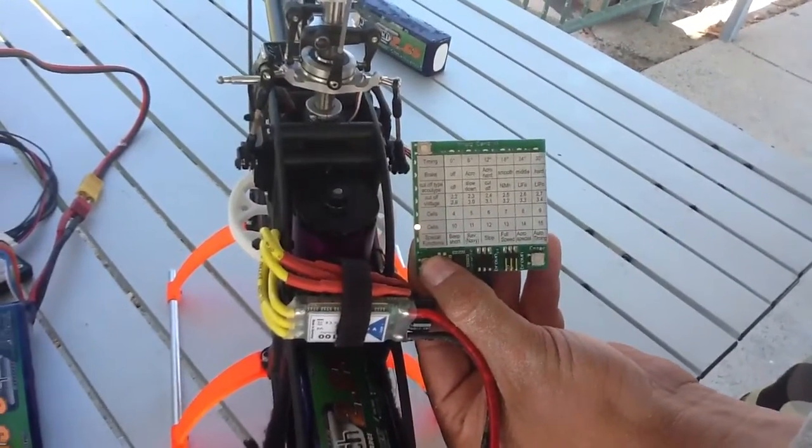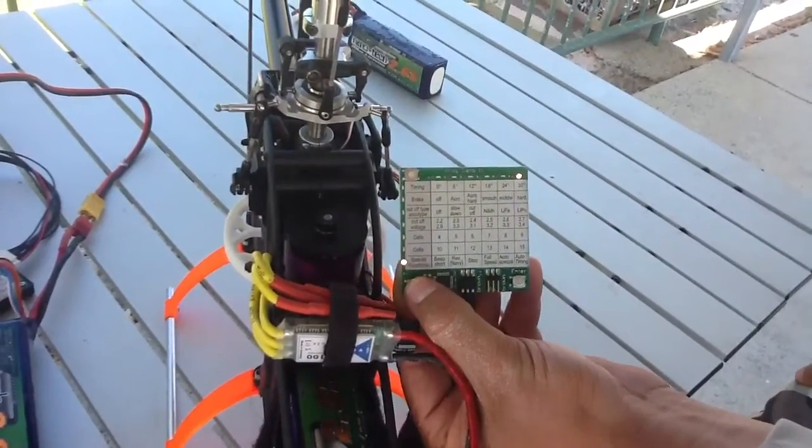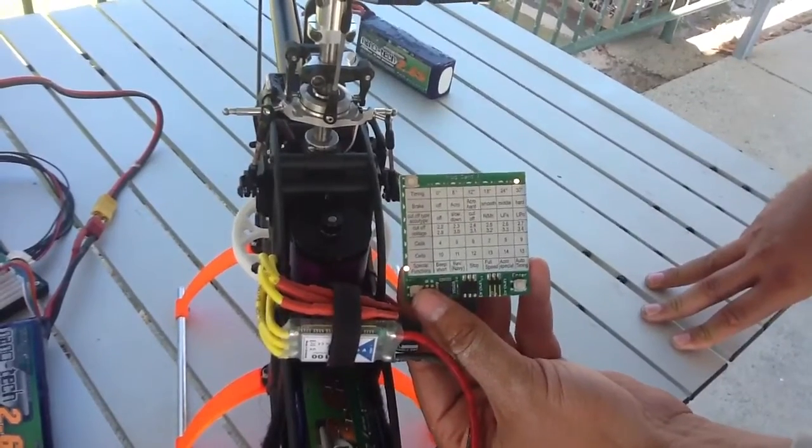The next one is for extra cells, but obviously I've already set the cells at the top, so I don't know if that's going to be blank. And these are the special functions that you can set for the speed controller.